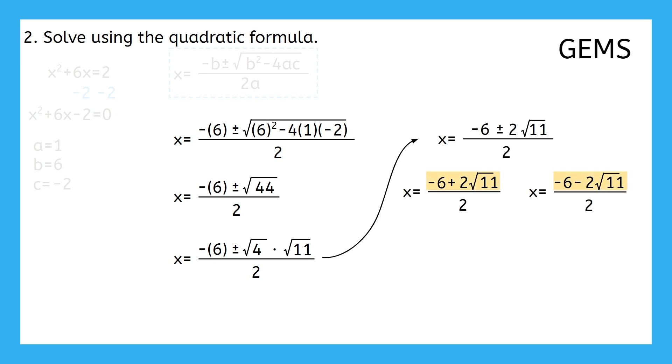Both numerators of our now two equations are simplified as much as possible. So what should we focus on next? Let's refer back to GEMS. Both the numerator and denominator groupings and the square roots are simplified as much as possible, so that takes care of the G and E steps. The M stands for multiplication and division, and we do have some division here. Each of these numerators have two terms, so due to the distributive property of division, we can rewrite the equations so that each term in the numerator is divided by the denominator. Starting with the equation on the left, negative 6 divided by 2 is negative 3, and 2 divided by 2 is 1, leaving us with the square root of 11. We can do the same thing with the equation on the right, leaving us with our final answers: negative 3 plus the square root of 11 and negative 3 minus the square root of 11.